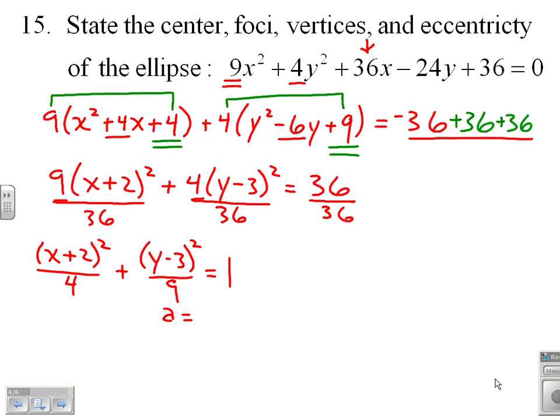And now I've learned that a is 3, b is 2. I've also learned that because this is a y squared on a squared, 9 being bigger than 4, I have a tall ellipse.